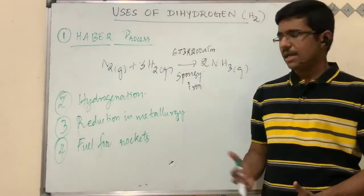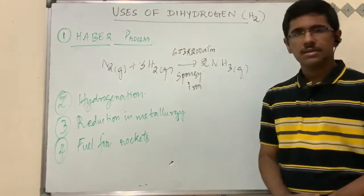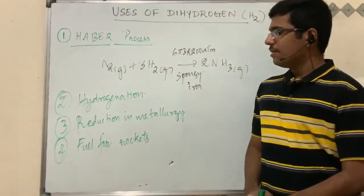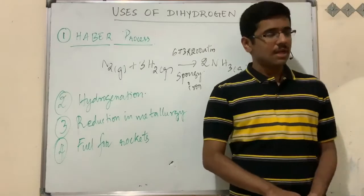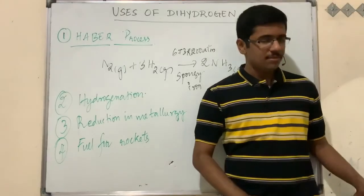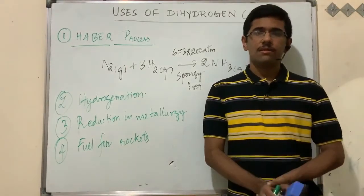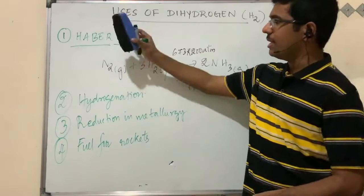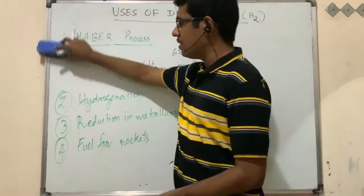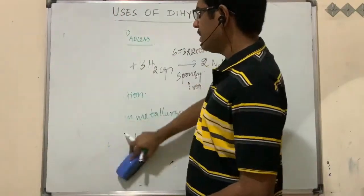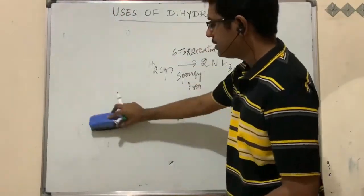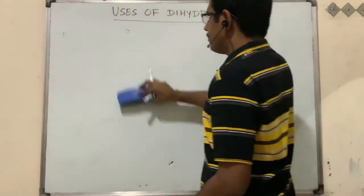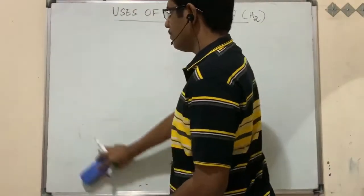The fifth use of dihydrogen is in the hydrogen economy. The hydrogen economy simply means the safe storage and use of hydrogen as an energy carrier.